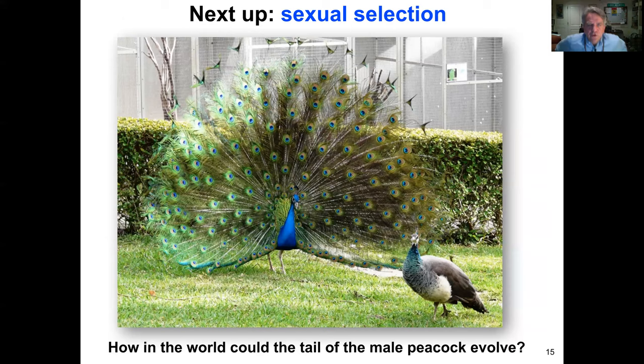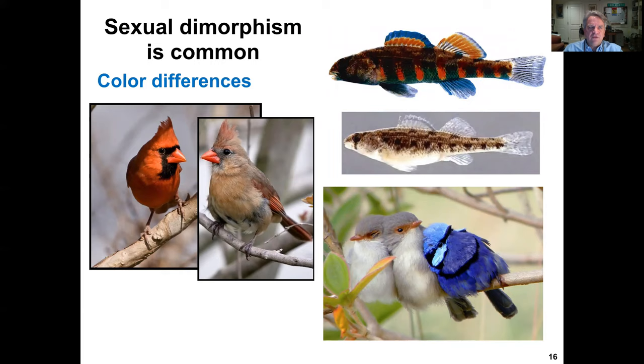Now let's talk about sexual selection — asking how a trait such as the tail of a male peacock could evolve. This is not through artificial selection, where humans affect phenotypes, but how do such traits evolve naturally? We commonly see differences among sexes, called sexual dimorphism, including color differences where males are more brightly colored than females.